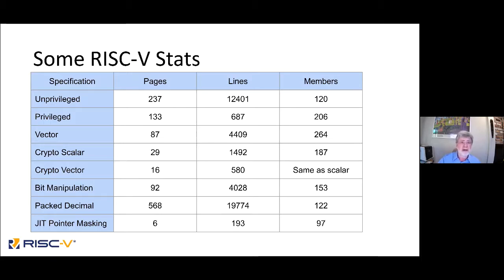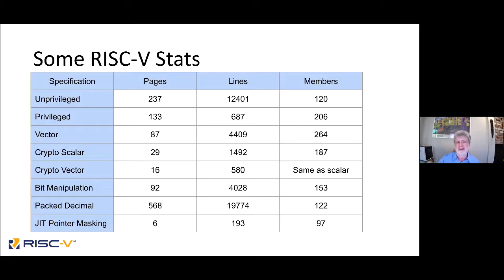How does this compare to Linux? Linux is somewhere around 25 million lines of code with now around 17,000–18,000 contributors. We have a total of about 1,800 contributors and roughly 50,000 lines of prose — but the prose is dense. It's not like code with comments, spaces, and one operation per line. You have to read it and understand it — think of it as roughly a 10x multiplier, so 50,000 lines of prose might be equivalent to 500,000 or even 5 million lines of code. And all the work on these specifications is done by architects.